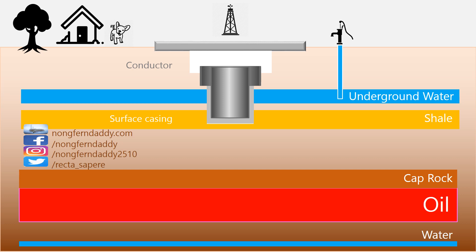You may observe that we drill this section without any protection. There are reasons for that. Firstly and obviously, there is no platform or anything to sit the blowout preventer, or BOP, on. Secondly, it is not necessary. There is not much pressure in this section because we drill very shallow, just to cover the water-bearing formation.